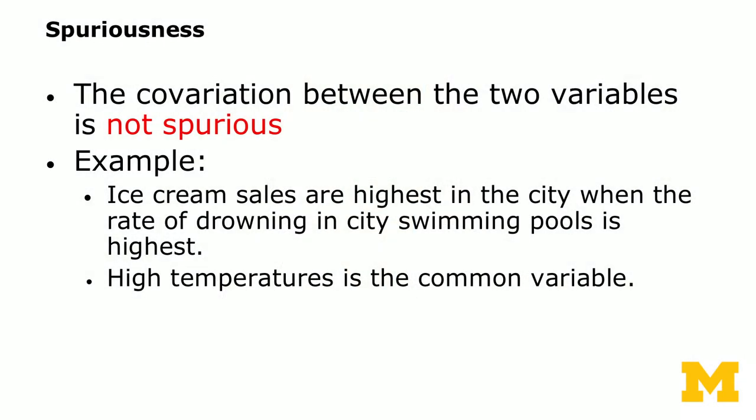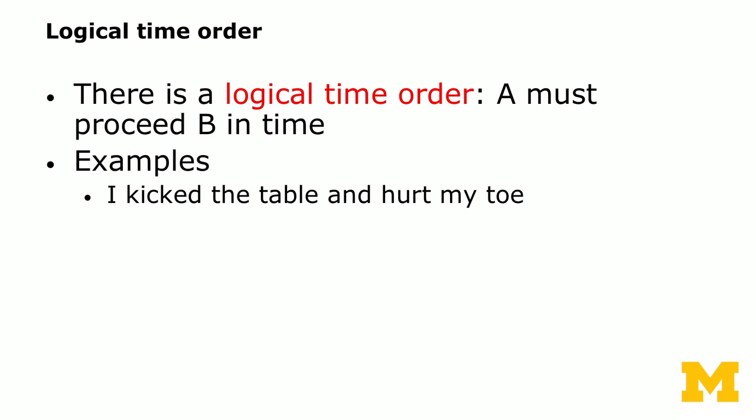The third aspect required for causation is a logical time order: A must precede B in time. For example, if I kick the table and hurt my toe, kicking the table precedes hurting my toe, giving us a plausible time order where kicking the table is the cause of hurting my toe.